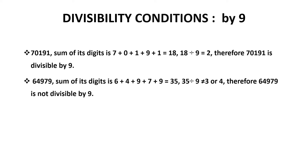The number 64973: the digits sum up to 35. 35 is not divisible by 9 — it leaves a remainder. Therefore the number 64973 is not divisible by 9.